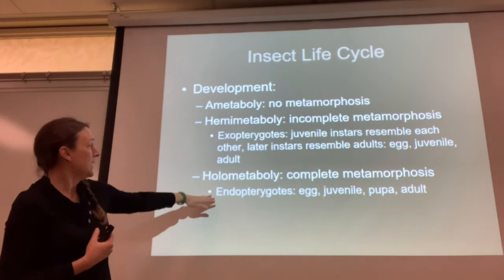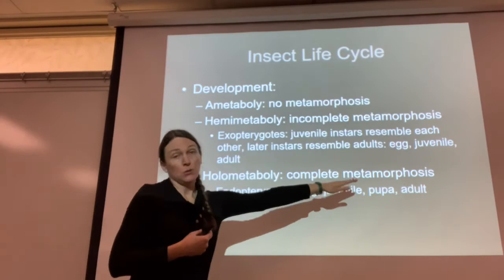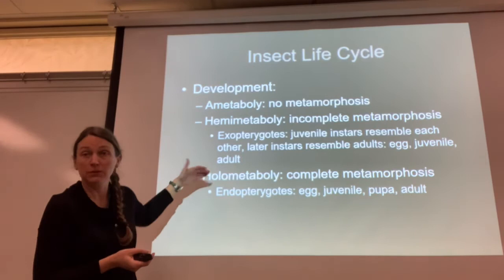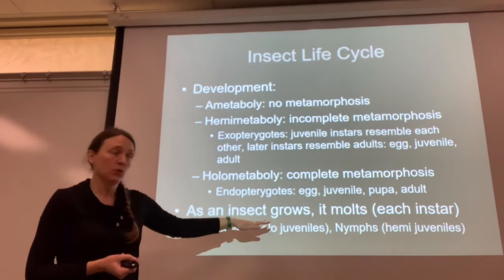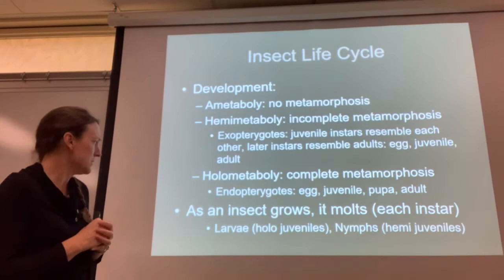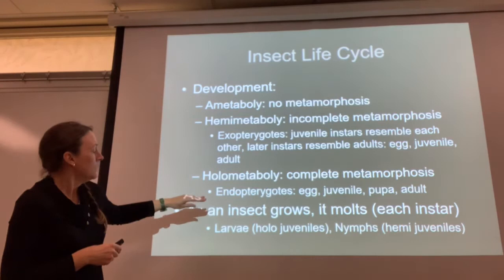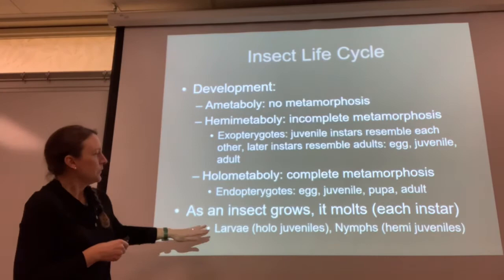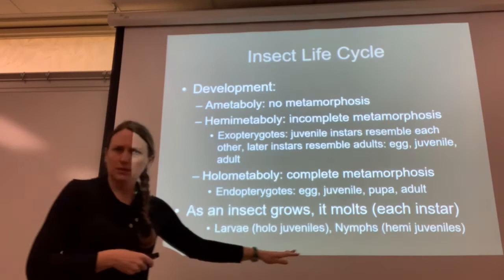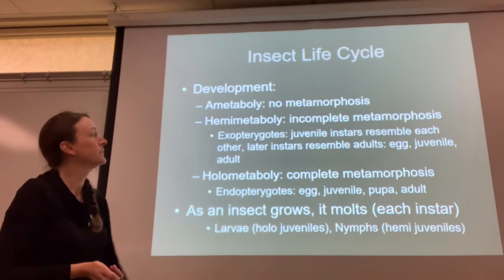That's hemimetaboly versus holometaboly, which is complete metamorphosis, where you're an endopterygote — you start as an egg, you become a juvenile, you pupate, you go through a pupal stage, and then you become an adult. As an insect grows, it molts and these stages are called instars. Some organisms might molt and go through like seven different instar stages. Some entomologists call larvae holometabolous juveniles and would use the term 'nymph' for hemimetabolous juveniles. Our book doesn't make that distinction and calls them all larvae, but that's the difference between hemimetabolous and holometabolous insects.